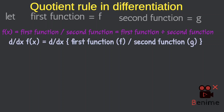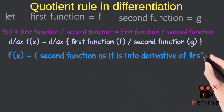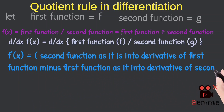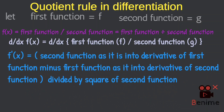Now I will write the statement of the quotient rule. The quotient rule states: the second function as it is, multiplied by the derivative of the first function, minus the first function as it is, multiplied by the derivative of the second function, whole divided by the square of the second function.